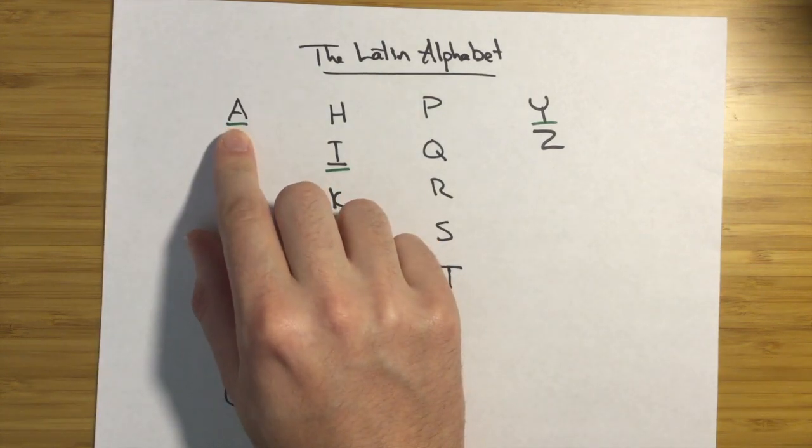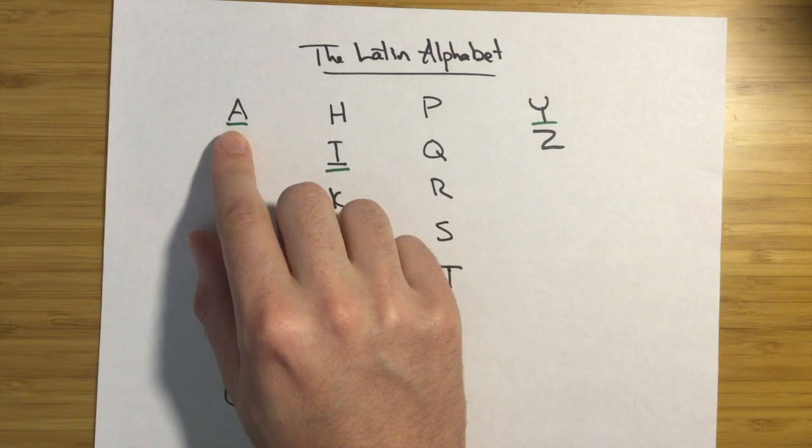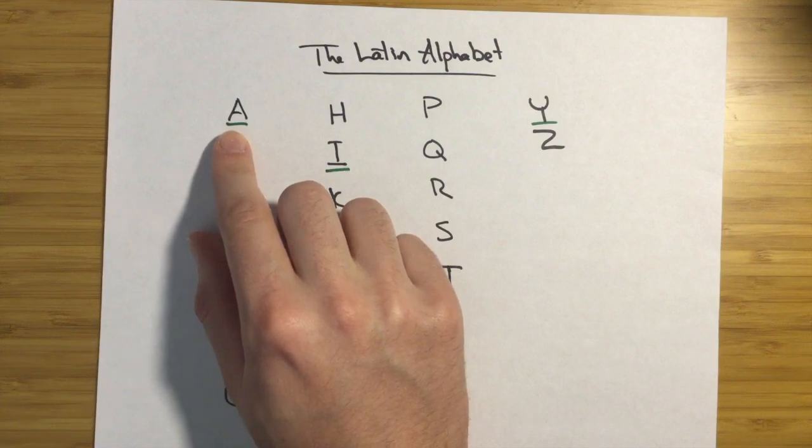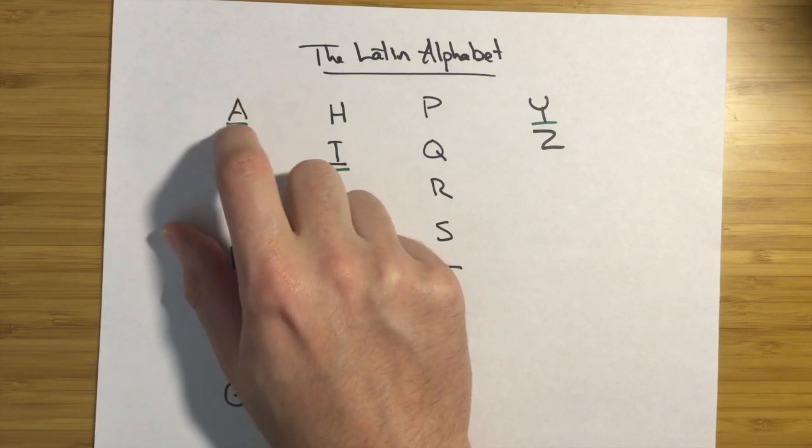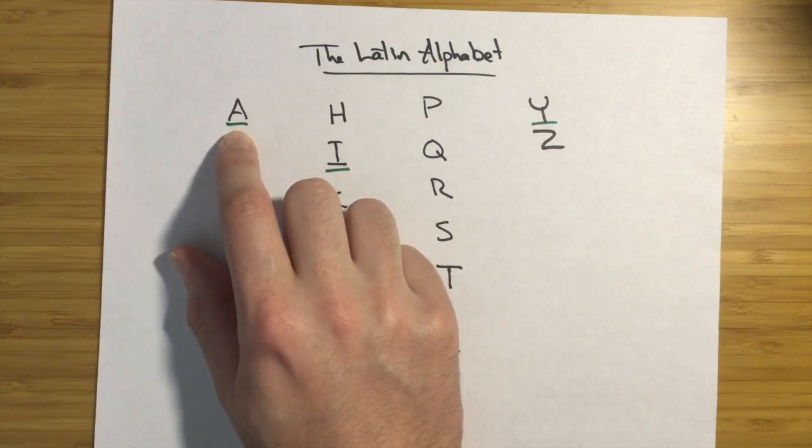So first letter here is A. It'll be pronounced A. There's a long and a short version. They're not always marked whether it's long or short, but if it is marked, you'll see a long line above the A, and that'll mean it's a long A. Just pronounce the long A longer than you pronounce the short A.